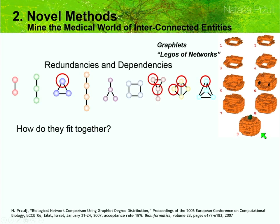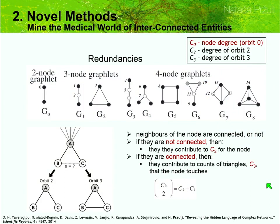Between graphlets, there are redundancies and dependencies. First we eliminate all redundancies. For example: C0 is the degree of a node, C2 is the count of orbit 2 — how many three-node paths a node touches in the middle — and C3 is how many triangles a node touches. The neighbors of node A are either connected or not: if not connected, they contribute to C2; if connected, they contribute to C3. So C0 choose 2 equals C2 plus C3. We have 17 such equations for up-to-five-node graphlets, and we can eliminate 17 redundant orbits.